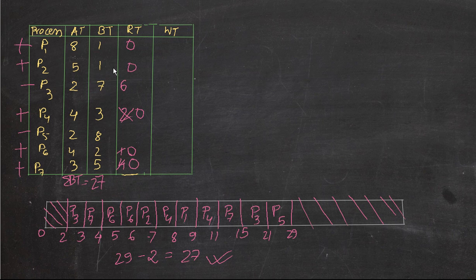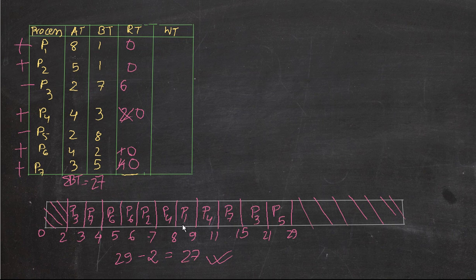For P1: its arrival time is 8 and its visiting time is also 8, so 8 minus 8 equals 0. P1 has appeared only once in the Gantt chart, so the waiting time is 0. For P2: it has also appeared once, with a visiting time of 6 and arrival time of 5, so 6 minus 5 equals 1.